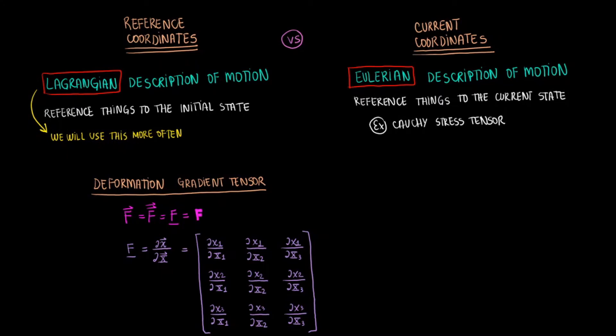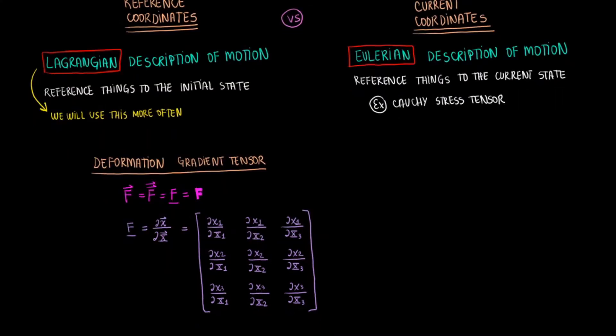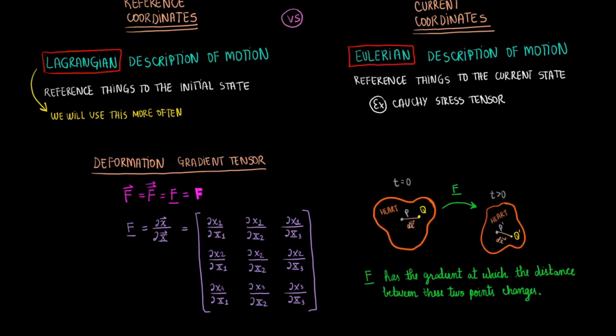As I had mentioned before, F is actually able to relate the differential line segments between d lowercase x and d capital X between two particles in a body undergoing strain. The relationship is a linear transformation. F is able to linearly transform d capital X from the undeformed state to d lowercase x at the deformed state. F is describing a transformation from original to current configurations. We can say that the deformation gradient tensor F tells us the gradient or the rate at which the distance between two points changes. As you can imagine, this is very important when we are studying strain or shape change in biomechanics.